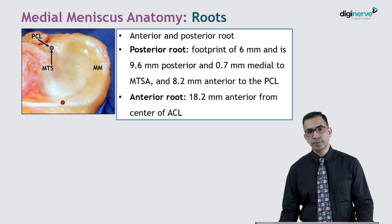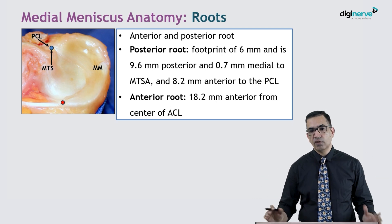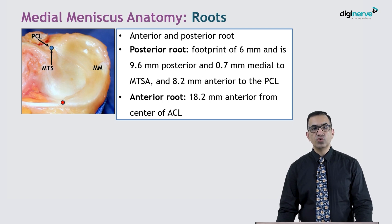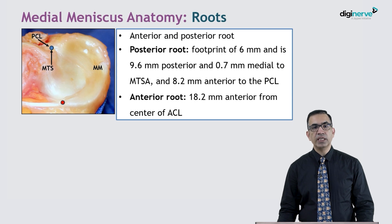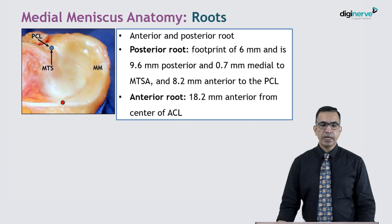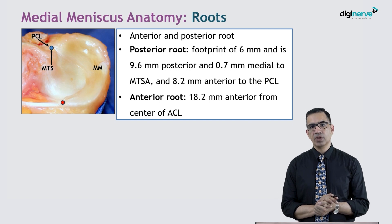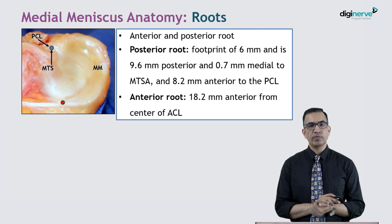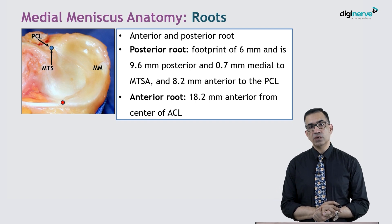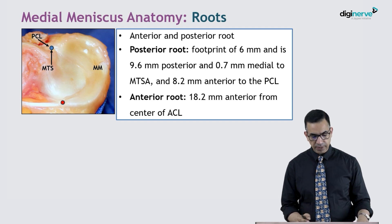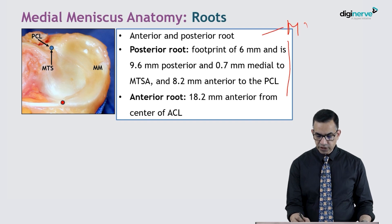Two people have worked extensively in the field of root tears, especially on the medial side. One is Robert Laprath, who has many recent articles. But there is one man from our country who initially described the root tear — Professor Nicholas Antao from Mumbai — in very early editions of the IGU journal. That article never gained widespread importance due to the lack of arthroscopy at the time. By the time arthroscopy became common, more literature was coming from the West. So it was Nicholas Antao sir who described it very well, and later most people follow the work of Robert Laprath.